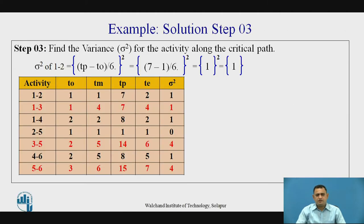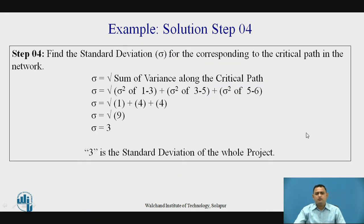As observed, marked in red, activity 1-3, activity 3-5, and activity 5-6 are the three activities on the critical path. Summing their variances: variance of 1-3 is 1, variance of 3-5 is 4, and variance of 5-6 is 4. So 1 + 4 + 4 = 9, and the square root of 9 is 3. The standard deviation of the whole project is 3.